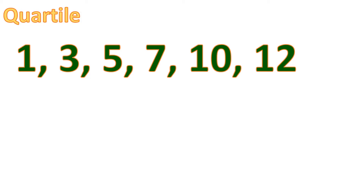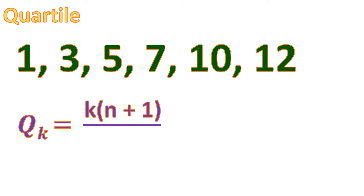Let's start with the quartile. The quartile divides the data into 4 parts, and we use this formula: Q sub K, where K stands for the position — either 1st, 2nd, 3rd, or 4th quartile. The formula is K times (N plus 1), all over 4. It's divided by 4 because it's the quartile, and K can be 1, 2, 3, or 4 depending on what is asked.